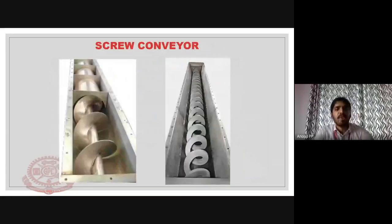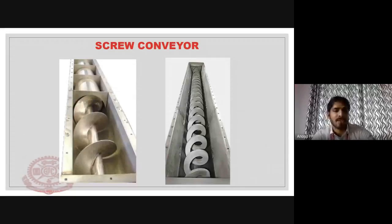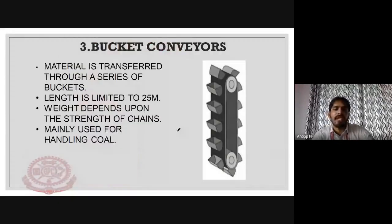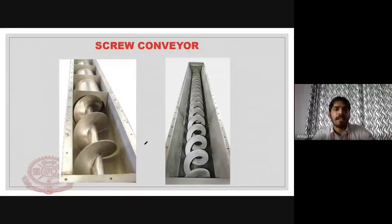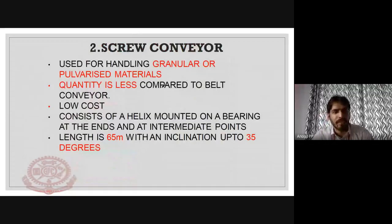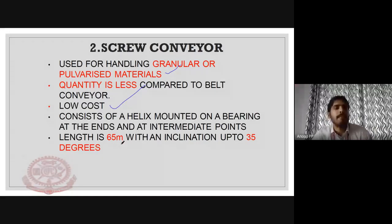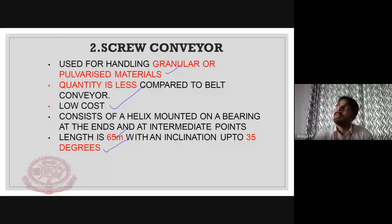The screw conveyor uses a screw to transport material. It is a low-cost conveyor and is normally provided at an angle of up to 35 degrees. It is used where the material needs to be transported at a height using a screw mechanism.